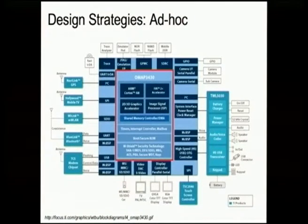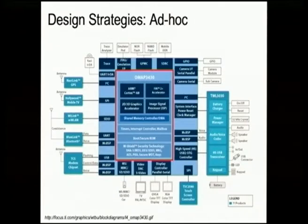When designing multiprocessor system-on-chips, there are two design strategies. One is ad hoc: you buy different components from different vendors and integrate them into one design. Each new design requires redoing that integration work. It's also quite static — once produced, all different blocks can only talk together in a previously configured way. The example here is the OMAP 3430, used in the N900 and the BeagleBoard.